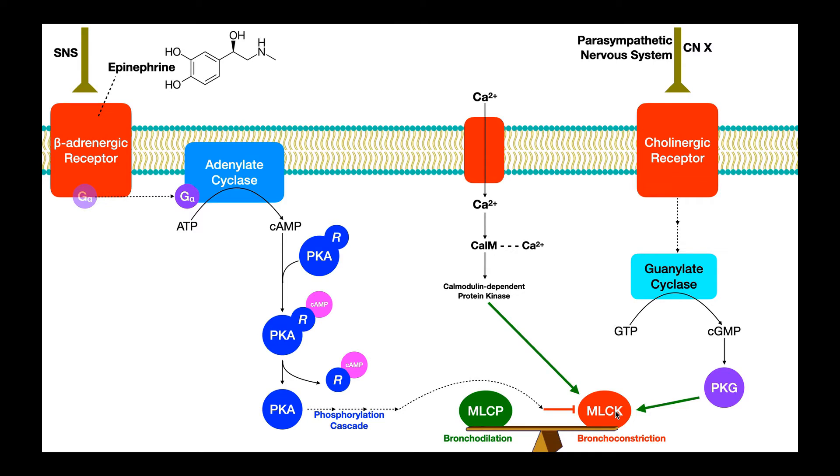Now why is that important? Remember the job of the sympathetic nervous system normally is to produce bronchodilation. If we're in a fight or flight response, we want the airways to dilate so that way we get more air in and out of the lungs. Well myosin light chain kinase is an enzyme that's going to ultimately promote constriction. So if we want dilation of the airways, then we need to inhibit myosin light chain kinase.